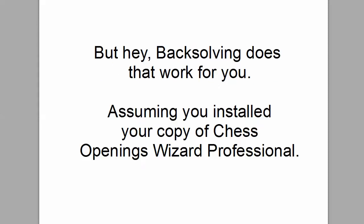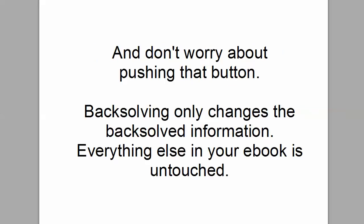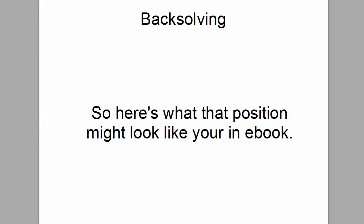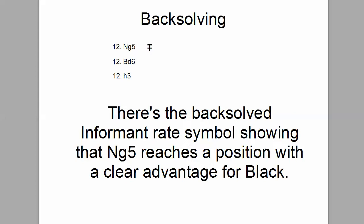It took a lot of work to figure out that Knight G5 is actually a bad move. But backsolving does that work for you. So, assuming you've installed your copy of Chess Openings Wizard Professional, start using it. And don't worry about pushing that button — backsolving only changes the backsolving information, and everything else in your eBook is untouched. Here's what the position might look like in your eBook. There are the candidate moves, and there's the backsolving informant rate symbol showing that Knight G5 reaches a position with a clear advantage for black.